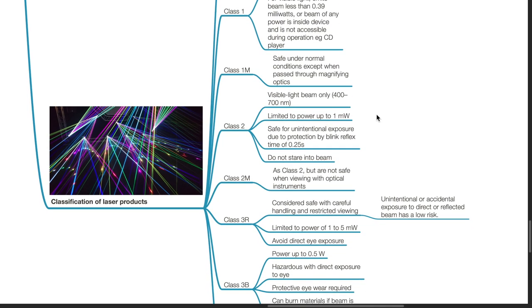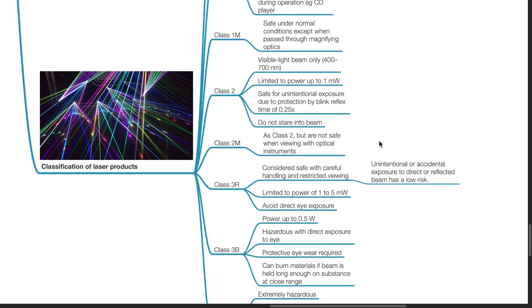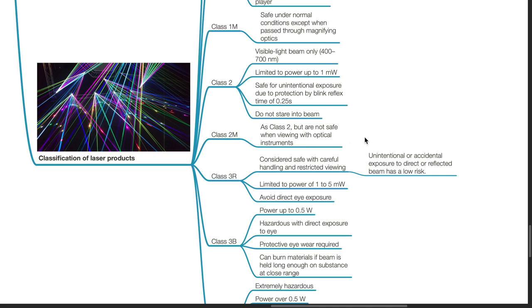Class 1M is safe under normal conditions except when passed through magnifying optics. Class 2 lasers: Visible light beam only, 400 to 700 nanometers. Limited to power up to 1 mW. It is safe for unintentional exposure due to protection by the blink reflex time of 0.25 seconds. Do not stare into the beam. Class 2M: As for class 2 but are not safe when viewing with optical instruments.